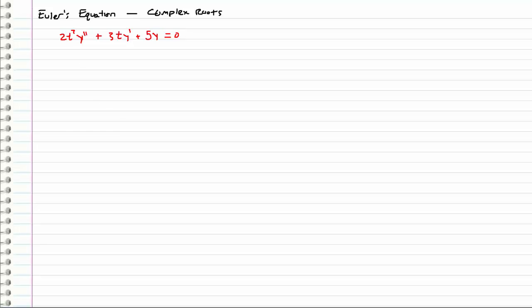We are back with another example of Euler's equation. This time we are going to look at the complex root case. First off, you have to recognize that it is indeed an Euler's equation. We can do that by recognizing that we have a t squared with the y double prime, then a t with the y prime, and then nothing in front of the y. So it is in the general form of the Euler's equation.